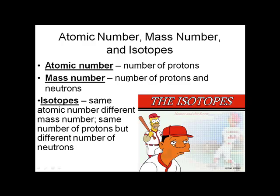Here's Chapter 2 Part 2: Atomic Number, Mass Number, and Isotopes. The atomic number is the number of protons. Any atom with six protons is carbon; any atom with seven protons is nitrogen. The number of protons determines what atom we have.